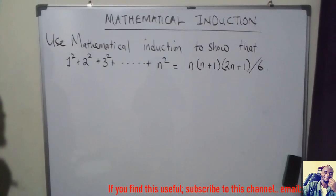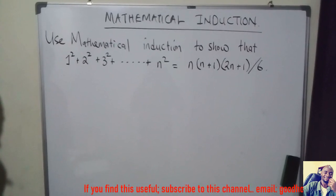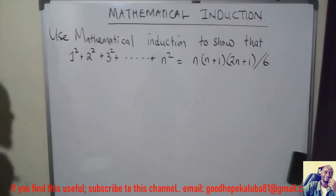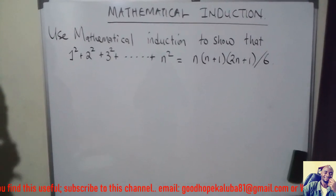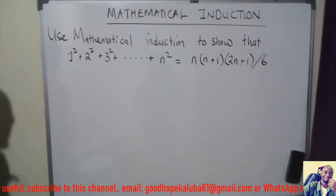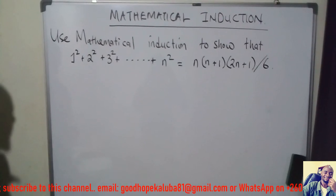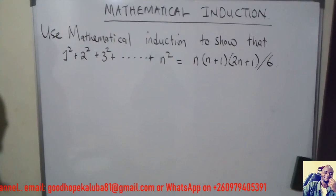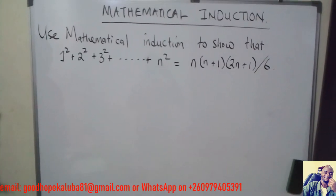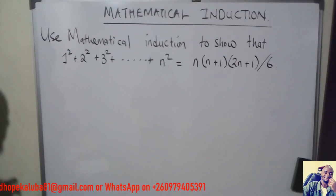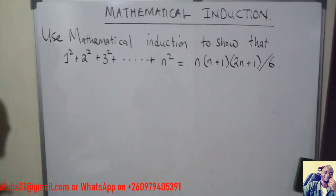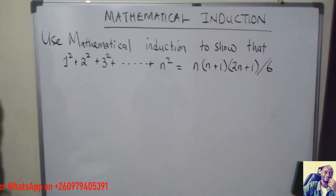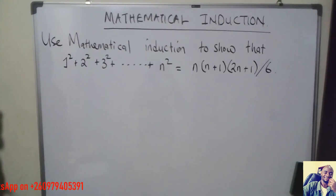The first thing you need to do is show that the formula is correct for the smallest possible integer — maybe n equals 1 or n equals 2. Then you assume it is correct for some other positive integer, say k, and make one equation. Then if it is true for k, it should also be true for the next value, which is k plus 1.